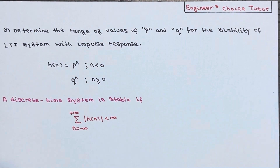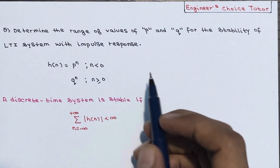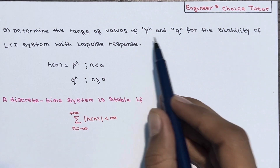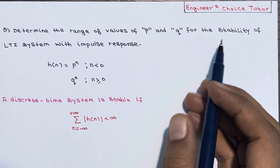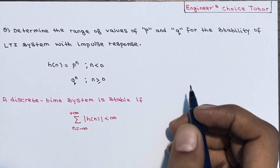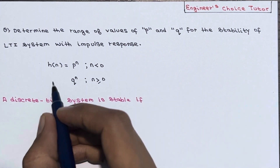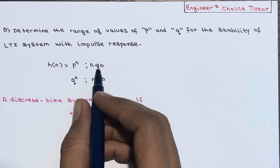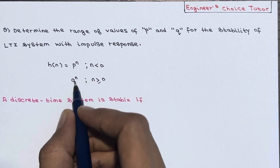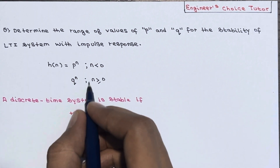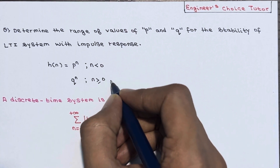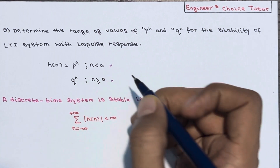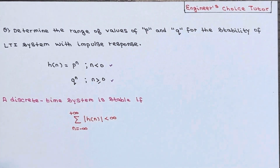Hi everyone. In this lecture we will determine the range of values of P and Q for the stability of the LTI system with impulse response H(n) equal to P to the power n when n is smaller than 0, and Q to the power n when n is greater than or equal to 0. We have to find out the range of values of P and Q for the stability of this system.